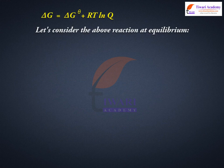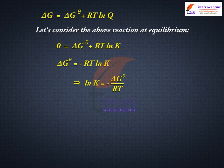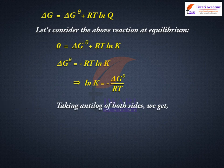Considering the above reaction at equilibrium: zero is equal to delta standard G plus RT natural log K. Therefore, delta standard G is equal to minus RT natural log K, which gives natural log K equals minus delta standard G upon RT. Taking the anti-log of both sides, K is equal to e raised to the power minus delta standard G upon RT.